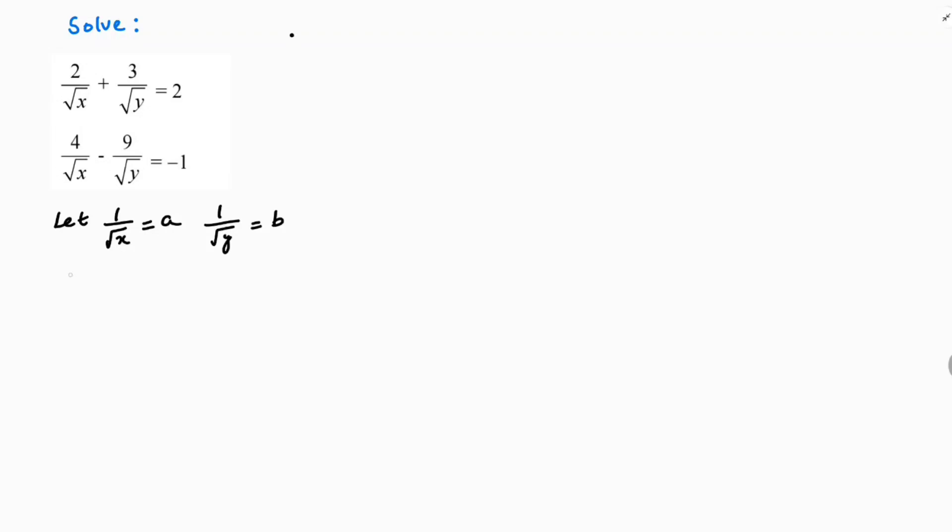So the first equation will be 2a plus 3b equals 2. The second equation: 4a minus 9b equals minus 1.